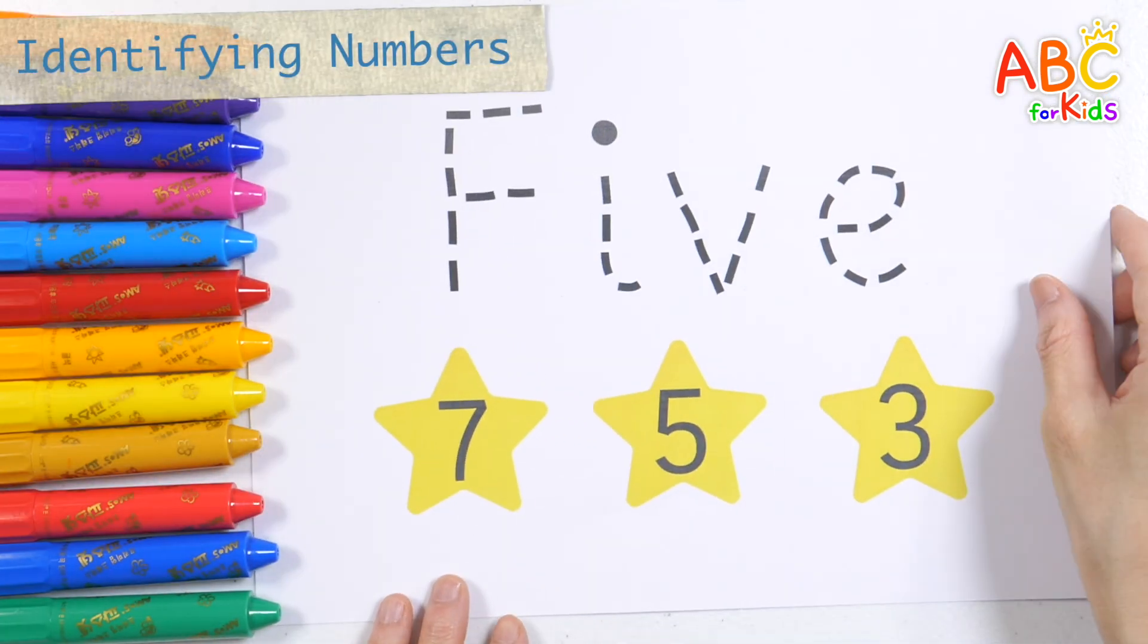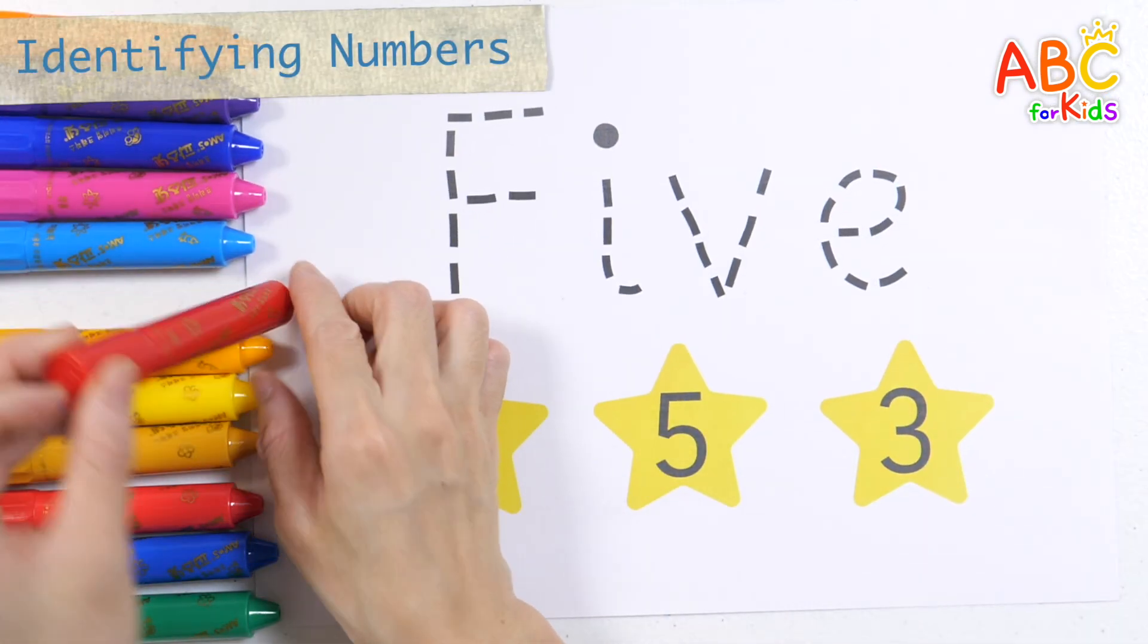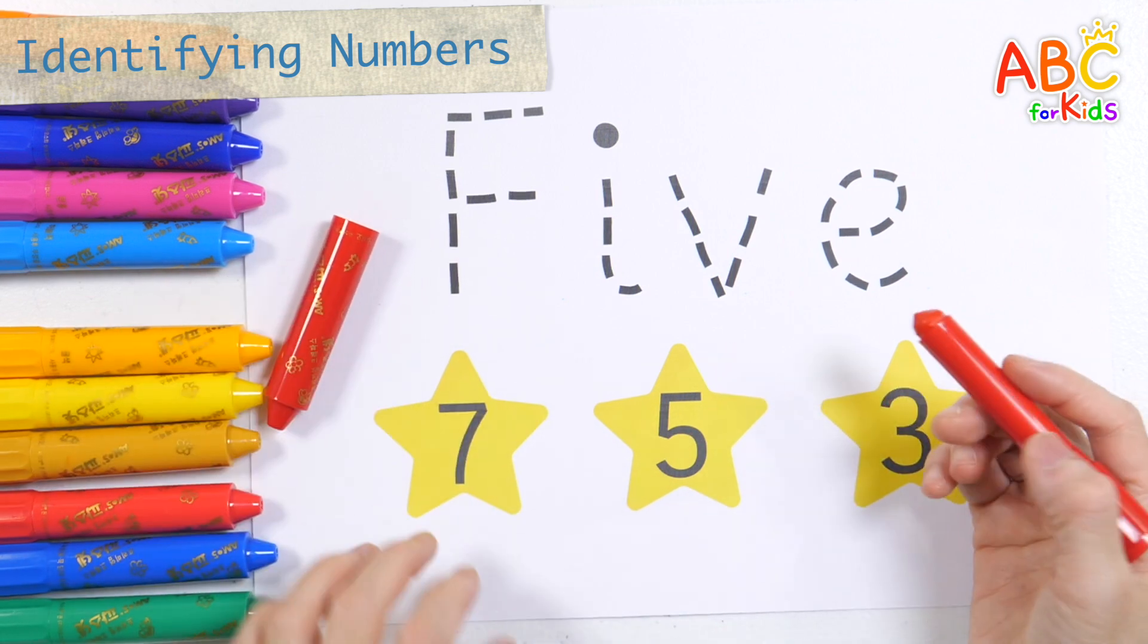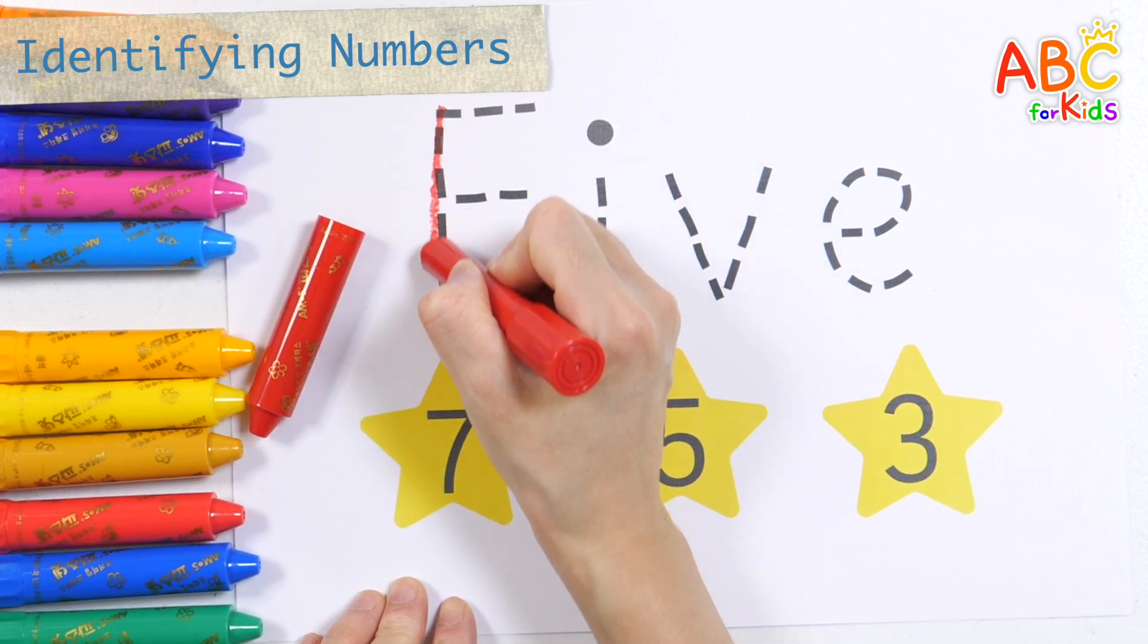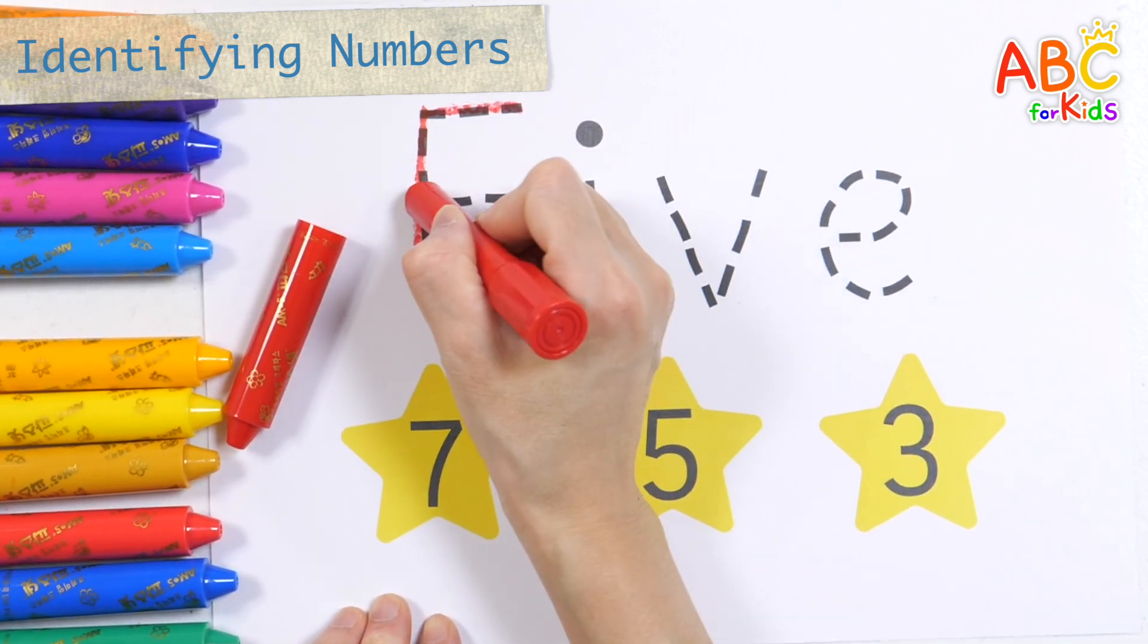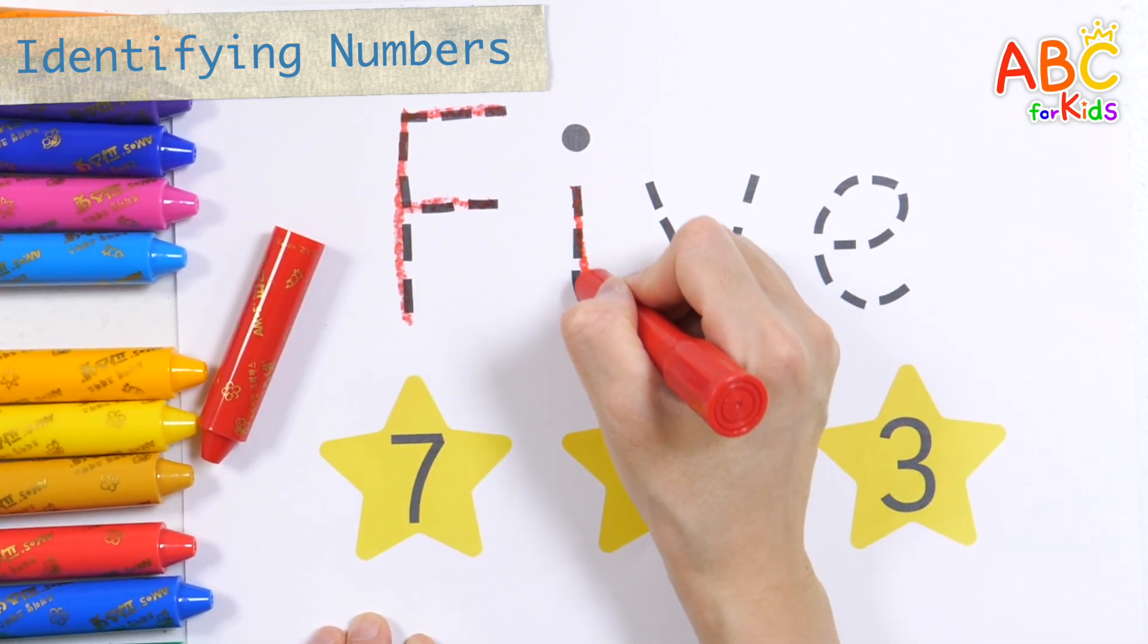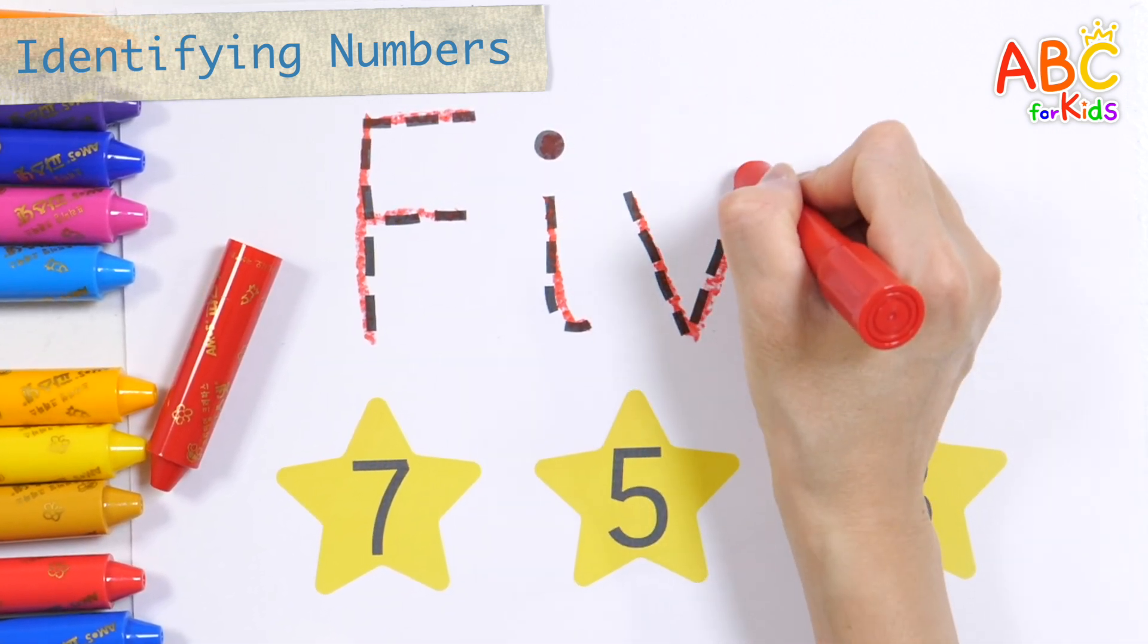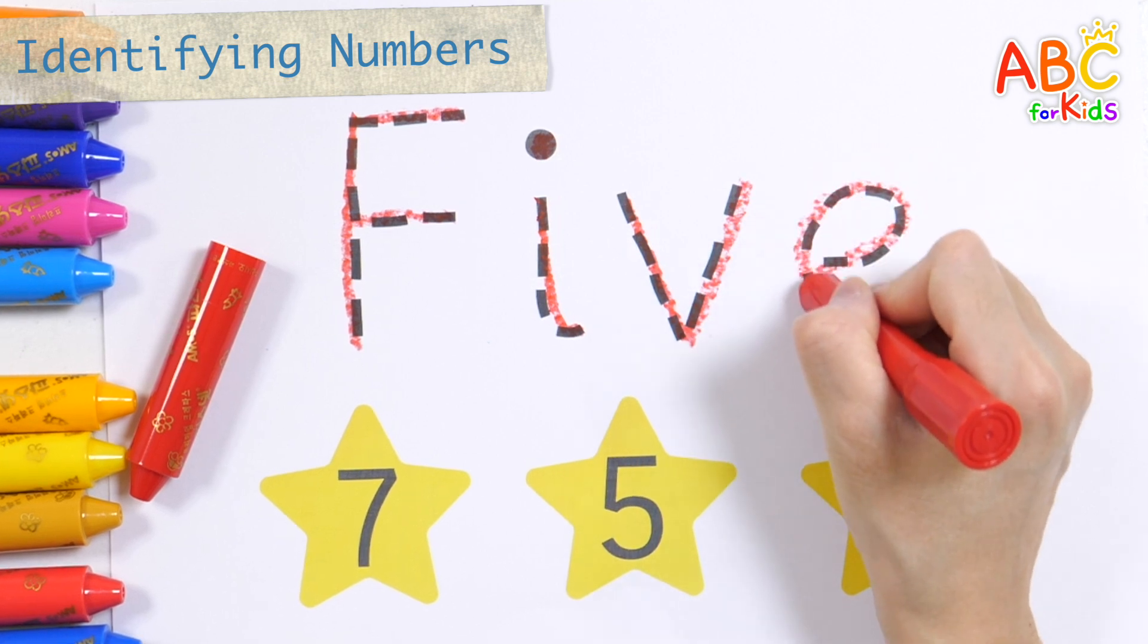Let's write the number 5 with a red crayon. J, K, L, M, N, O, P, Q, R, S, T, U, V, W, X, Y, and Z. Now I know my ABCs. Next time won't you sing with me?